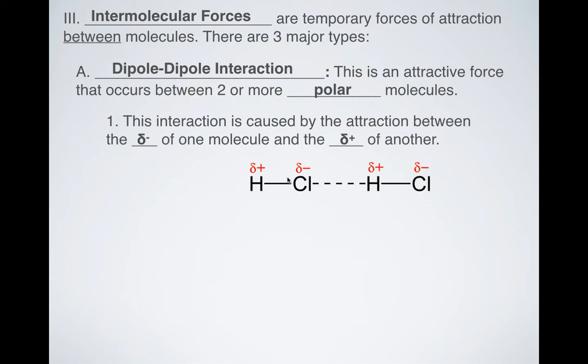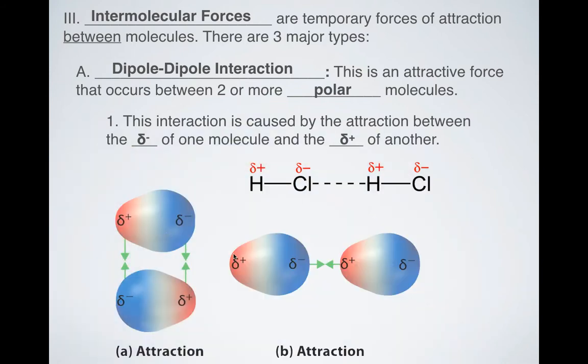So electronegativity comes back, and we have our partial negatives and our partial positives, and they're going to cause an attraction. So if I have two HCl molecules next to each other, the negative or more electronegative atom, which is the Cl, is going to be attracted to the more electropositive or less electronegative atom here, which is our hydrogen. And so you're going to get HCl molecules that are going to want to stick together because of that attraction. You can see that they can be attracted in two ways. They can also be attracted this way.